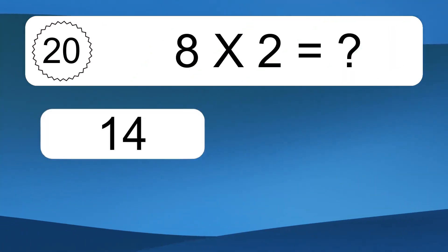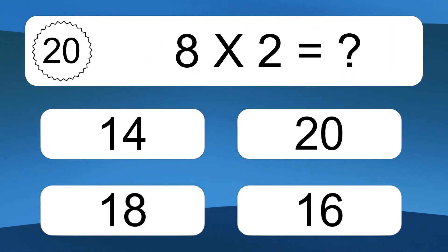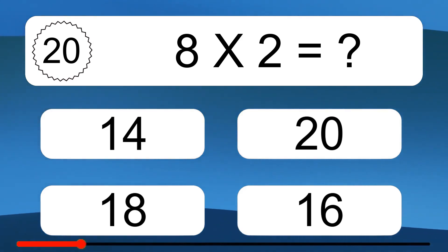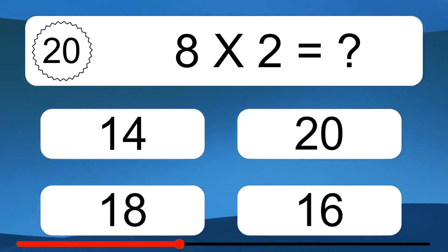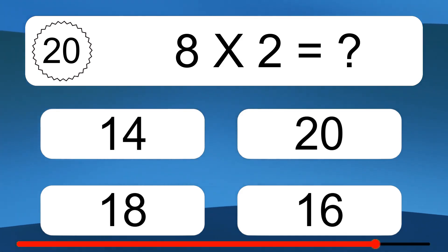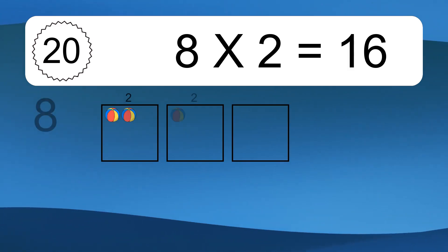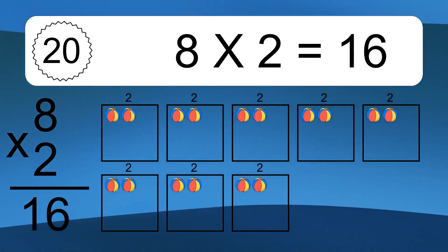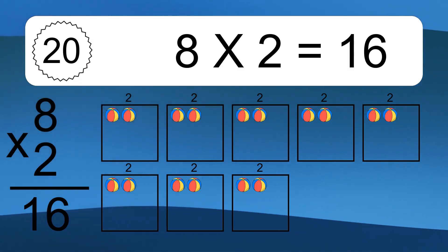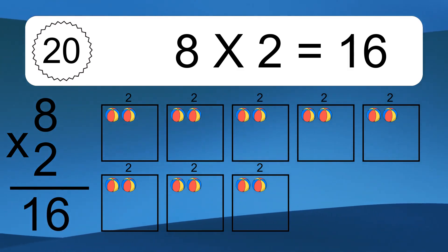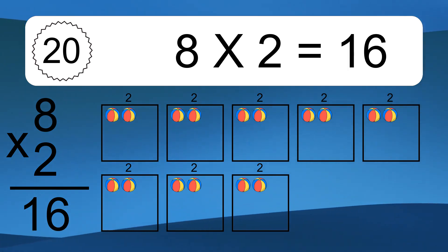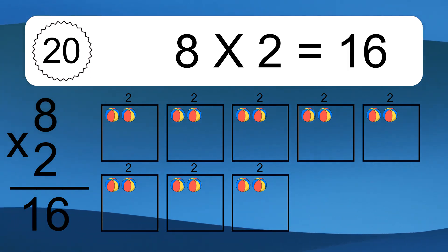8 times 2 equals what? 8 times 2 equals 16. We have 8 boxes, and each box has 2 colorful balls inside. If you count all the balls in all the boxes together, you will have 8 times 2 balls. This equals 16 balls.